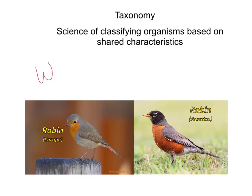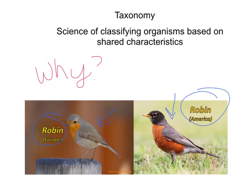One of the reasons why scientists use and need taxonomy is because common names can be confusing. Like the example we have here — both of these are called a robin. This one is called a robin in Europe, this one is called a robin in the United States. Just by looking at it, you can probably see that they are two totally different birds.